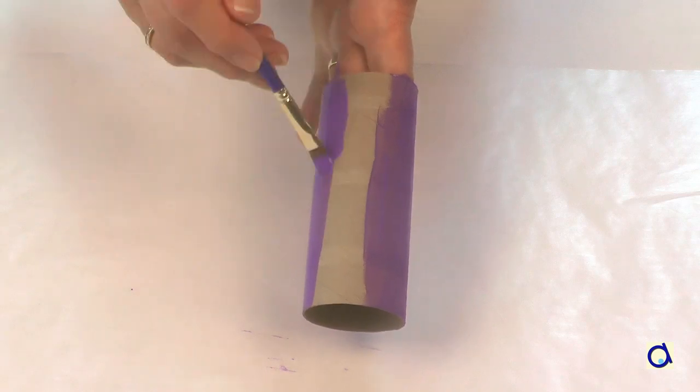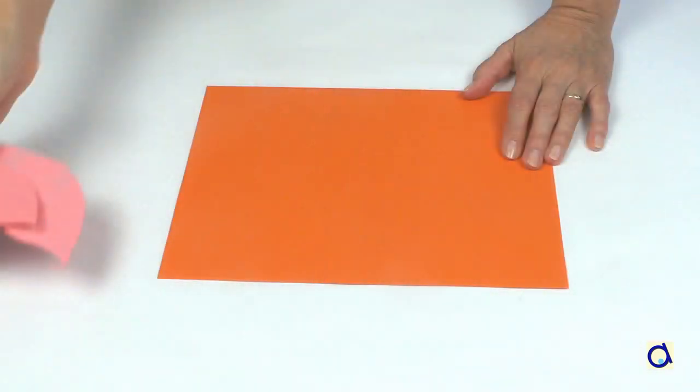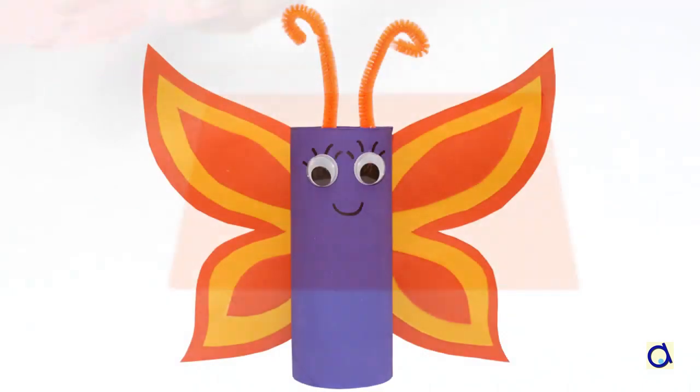While the paint dries, take construction paper in the colours of your choice. I painted the cardboard roll in purple and decided to make wings with very contrasting colours, orange and yellow.